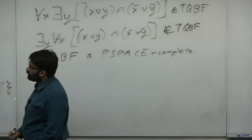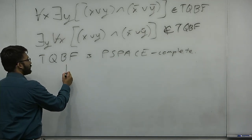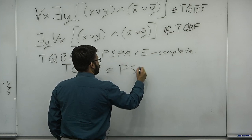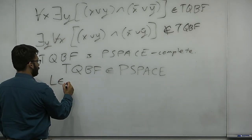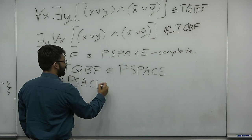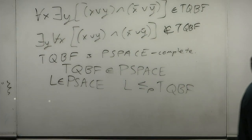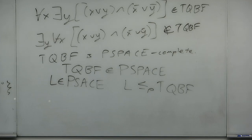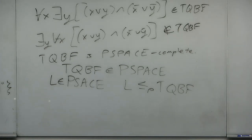What are the two things that make something PSPACE-complete? TQBF must be in PSPACE, and all problems in PSPACE reduce to TQBF — under polynomial time reduction. Why polynomial time reduction and not polynomial space? You want a reduction much weaker than the problems in that class so the reduction cannot accidentally solve something. All of P is P-complete under polynomial time reduction, which doesn't help define P itself.